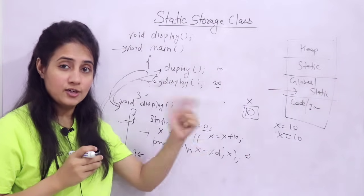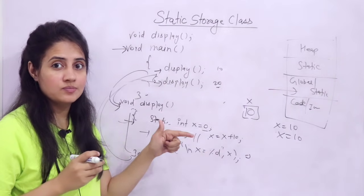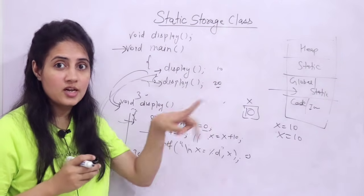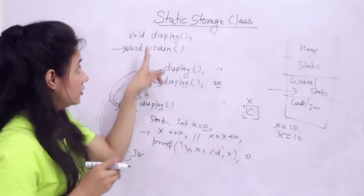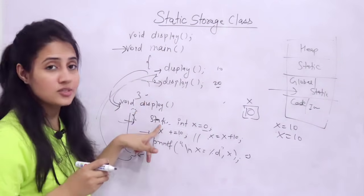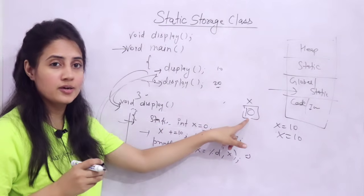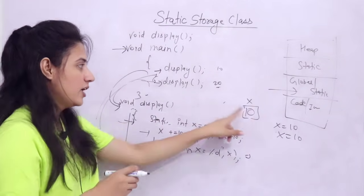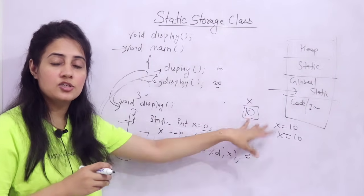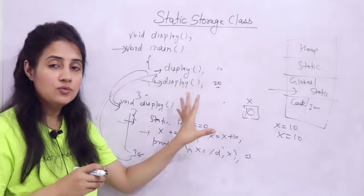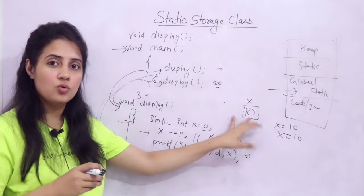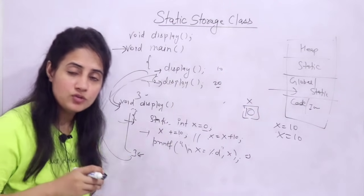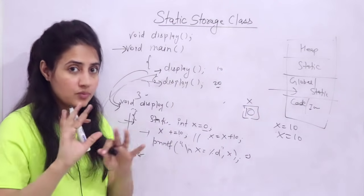This is the key point: the static variable retains its previous value. That's why it's a tricky question and why almost every competitive exam includes questions on static storage class — students miss this point. They assume the variable will be re-initialized each time the function is called. But a static variable is only initialized once, and till the end of the program it retains its value.